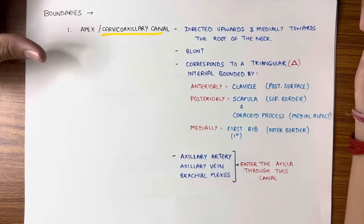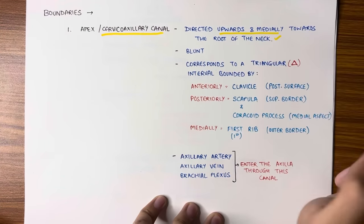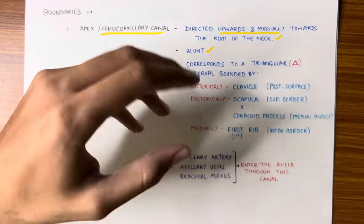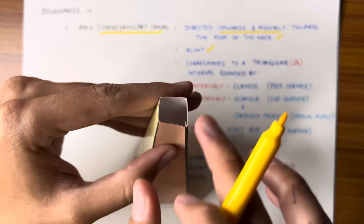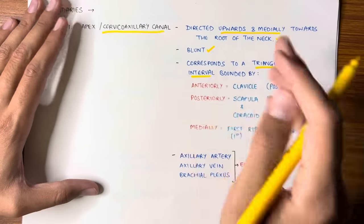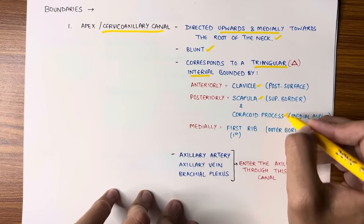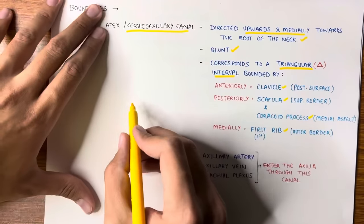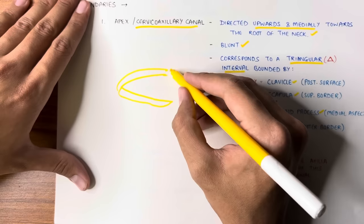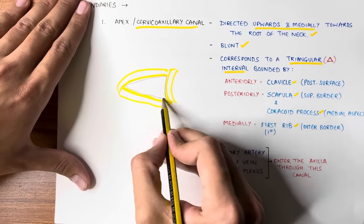The apex has another name: the cervico-axillary canal. Its direction is upwards and medially towards the root of the neck. The apex is not pointed — it is blunt. The apex is formed by a triangular interval, meaning a triangular gap between three things: the clavicle, the scapula (with its coracoid process), and the first rib.